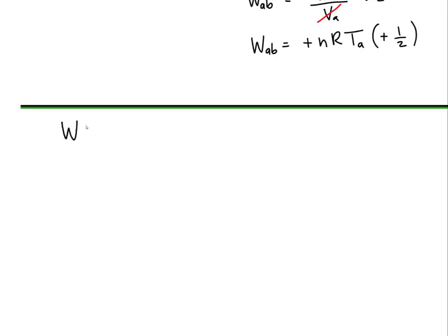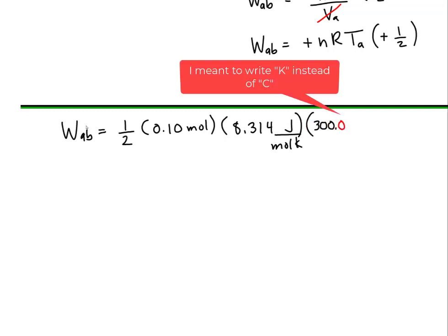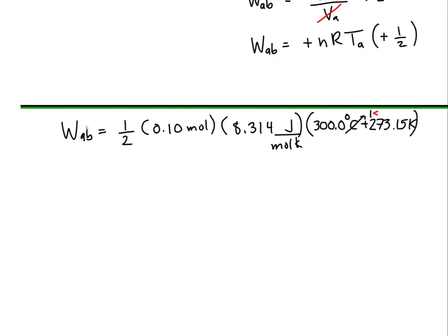Now let's plug in numbers. The work from A to B equals one half times 0.10 moles times 8.314 joules per mole·Kelvin times the temperature, which is 300 degrees Celsius converted to Kelvin by adding 273.15 K. When we compute this, we get 240 joules of work done during the isobaric process.